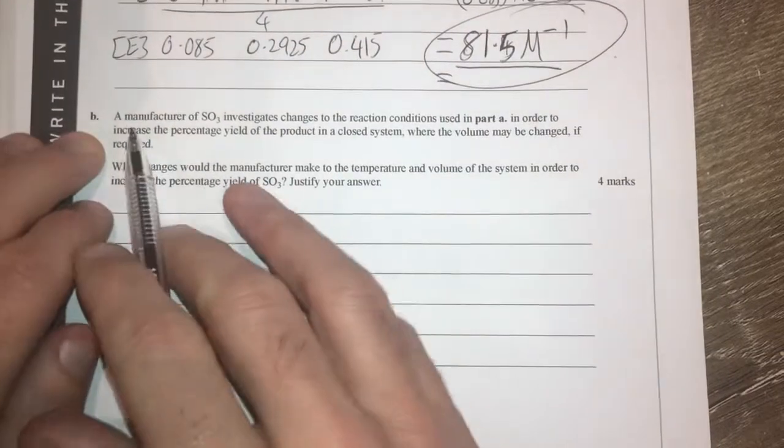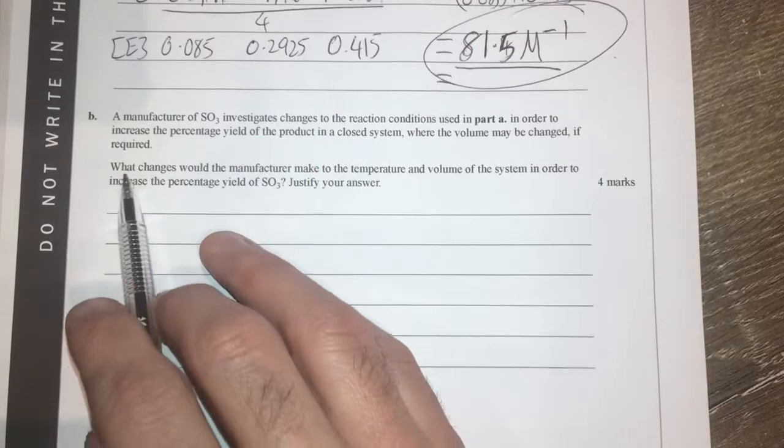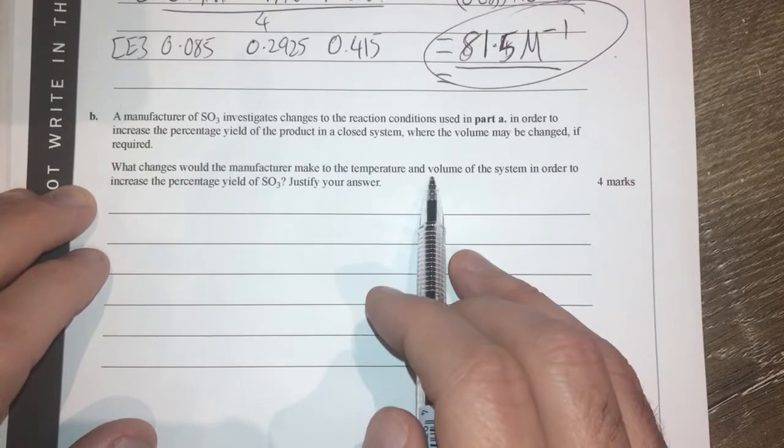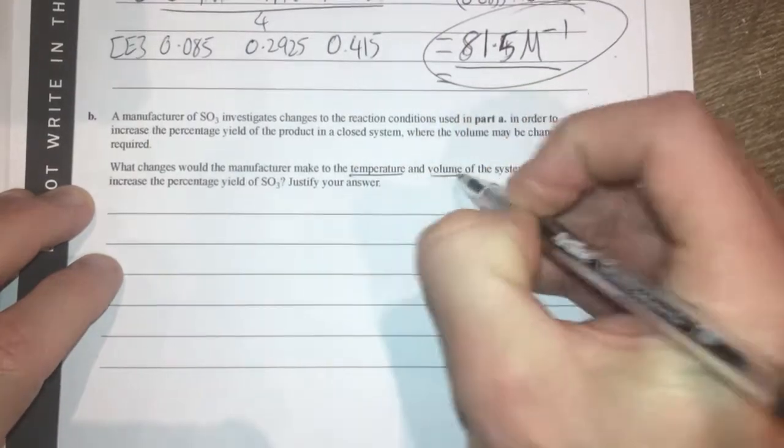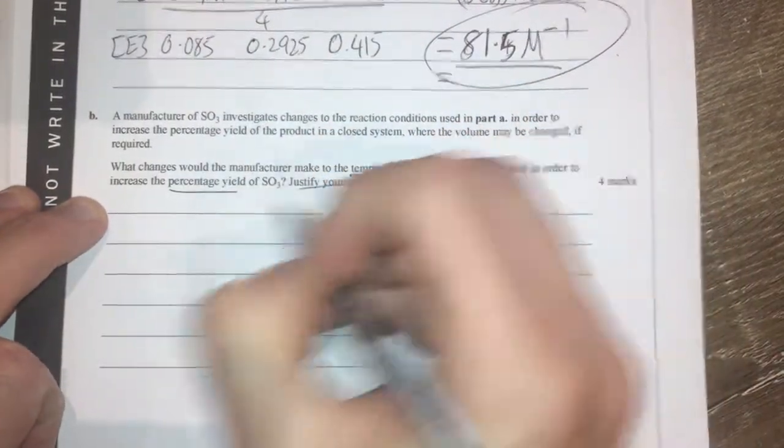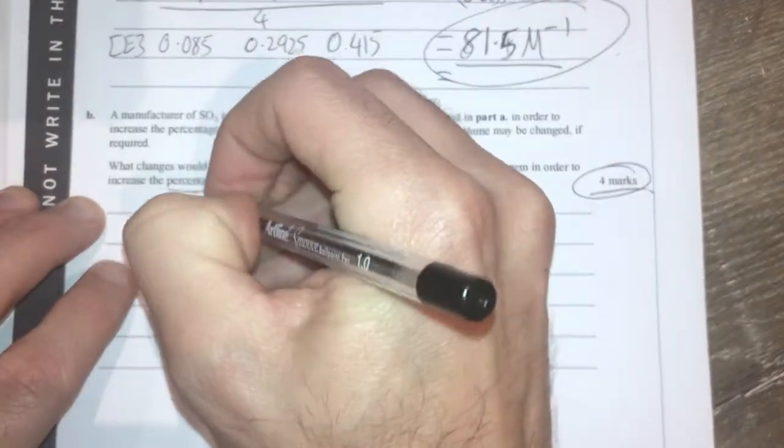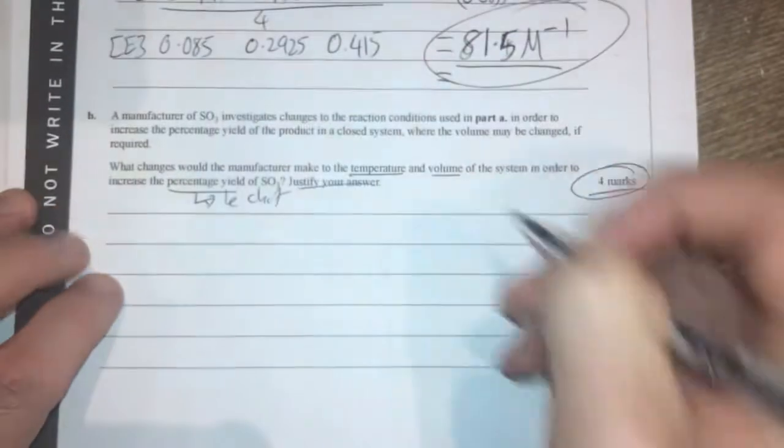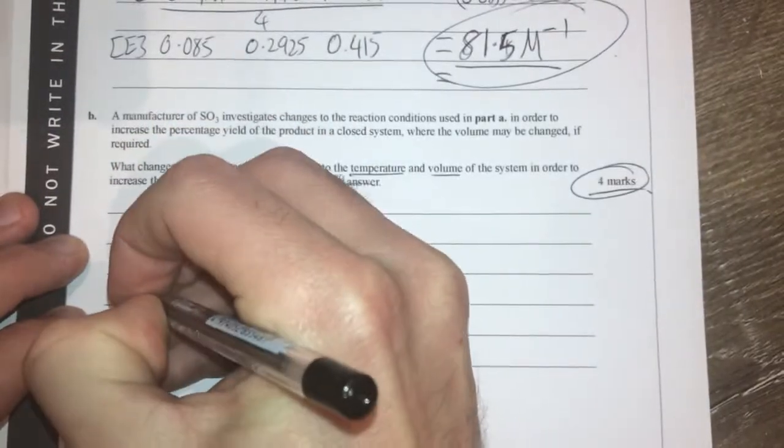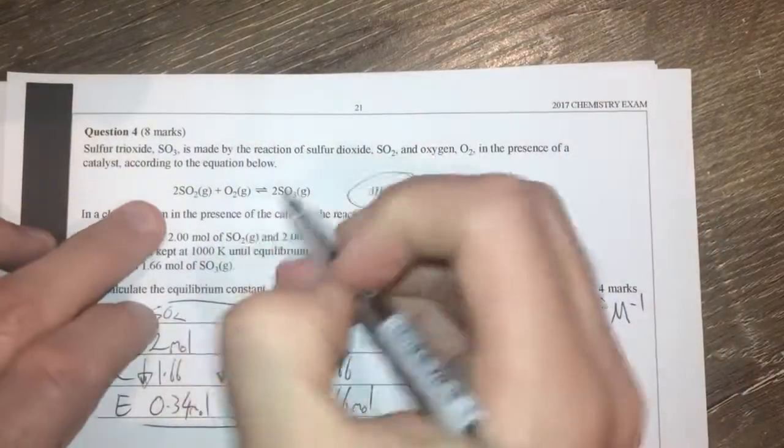Let's have a look at part B. A manufacturer of sulfur trioxide investigates changes to the reaction conditions. What changes would the manufacturer make to the temperature and volume of the system in order to increase the percentage yield and justify your response for four marks? So percentage yield is all about Le Chat. Four marks suggest I need four clear dot points. And let's have a look with Le Chat, what's going to favor my forward reaction?